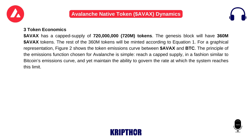The principle of the emissions function chosen for Avalanche is simple: reach a capped supply in a fashion similar to Bitcoin's emissions curve, and yet maintain the ability to govern the rate at which the system reaches this limit.